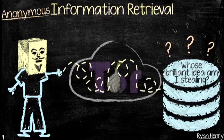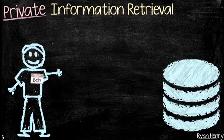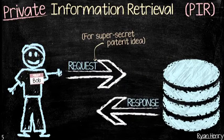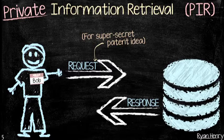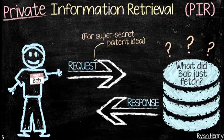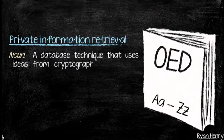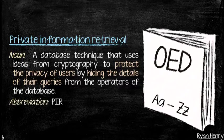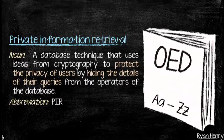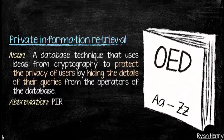What we really want to solve is allowing the user to query the database while the database has no clue what the user looked for. We're not trying to protect the identity of the user — we're trying to protect the contents of the query. If you want to protect the identity of the user, you can do all of this over Tor and then you get both notions of privacy. That's the basic hand-wavy version of what PIR — private information retrieval — is.